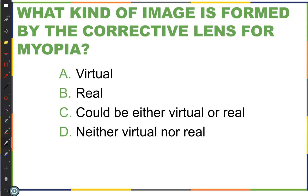For hyperopia, you can't see closely — the common name is farsighted. You need a lens to take an object at the ideal near point, which is 25 centimeters, and make an image at your actual near point. So for hyperopia you're doing a correction for the near point; for myopia you're doing a correction for the far point.